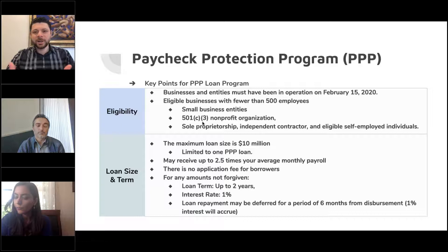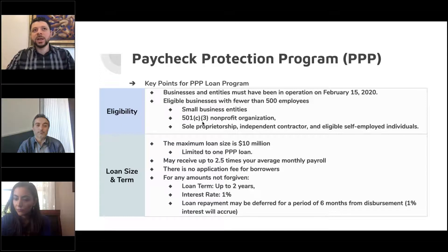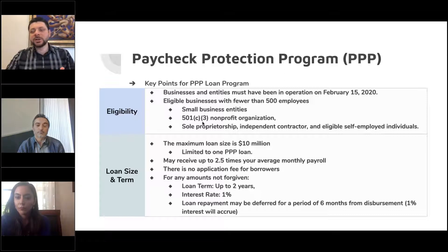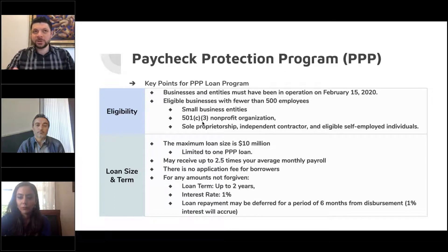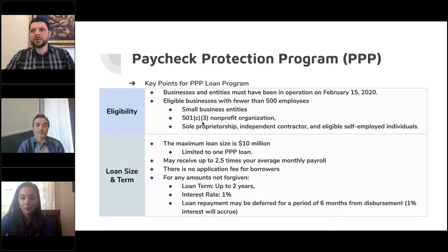Something worth checking with your lender: in their final interim rule from the SBA and Treasury, they further clarified the separation between the cash equivalent of what somebody receives in their paycheck and the benefits that could be rolled into or added to that amount. In other words, you may have only been applying for your cash equivalent payroll portion, but there's this other amount that could allow you to qualify for a much larger loan.